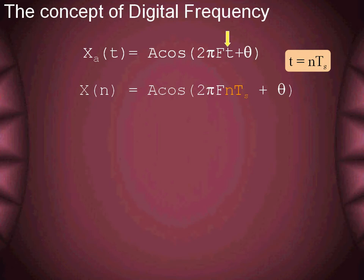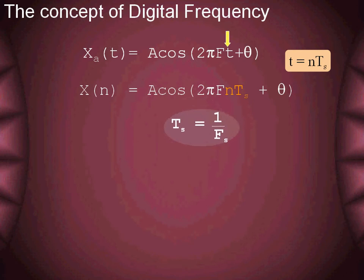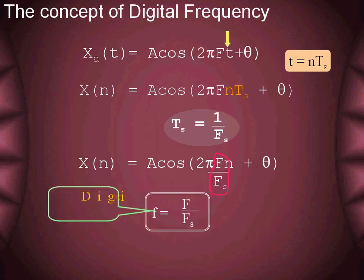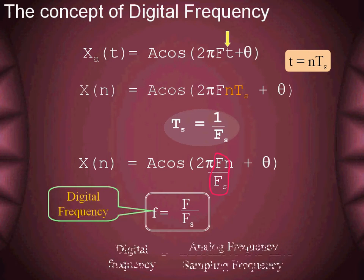The reciprocal of the sampling time is the sampling frequency, denoted as Fs. Therefore, replacing the sampling interval by the sampling frequency term, we reach an interesting relation: the ratio of analog frequency to sampling frequency, called the digital frequency.